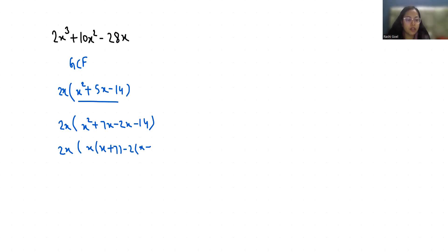Now 2x, so x + 7 is common, so we get x - 2. So these are the three solutions. And if you want the solutions, you can set them equal to 0. So first, 2x = 0, so x...